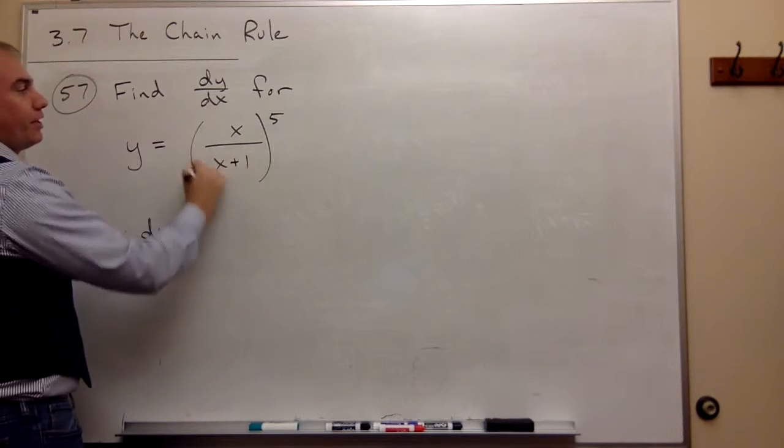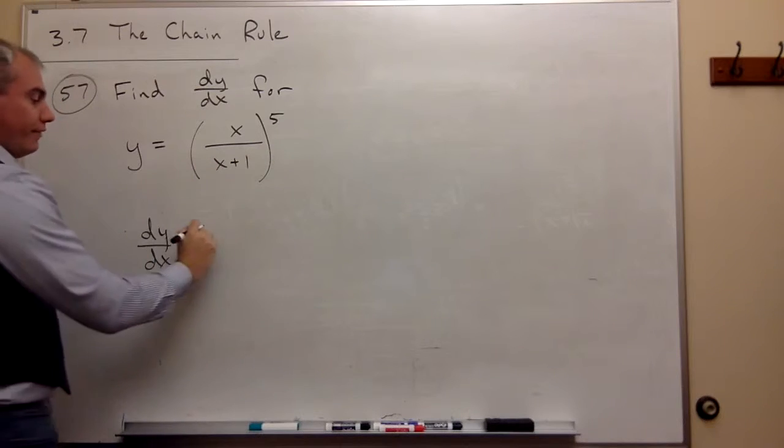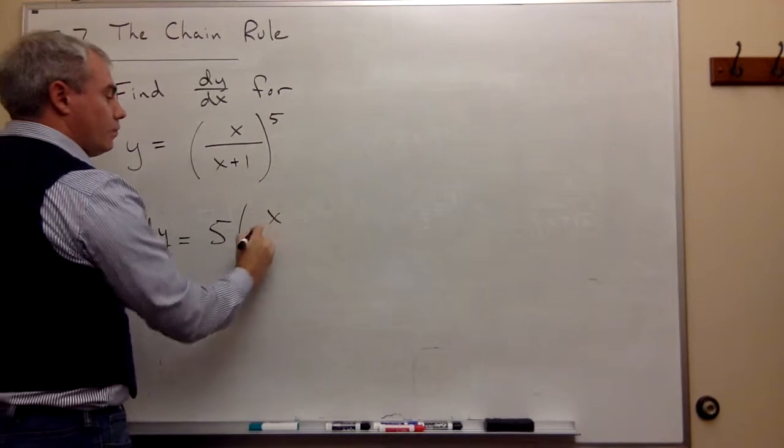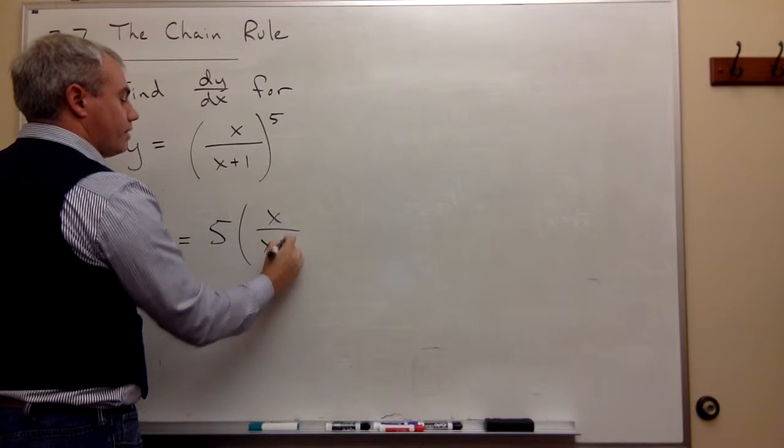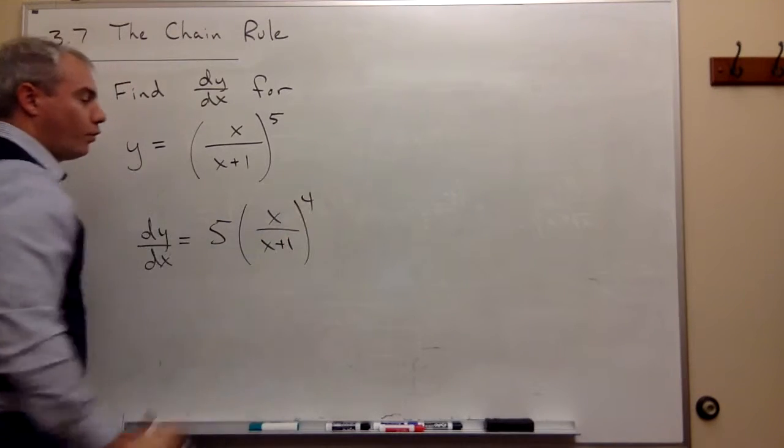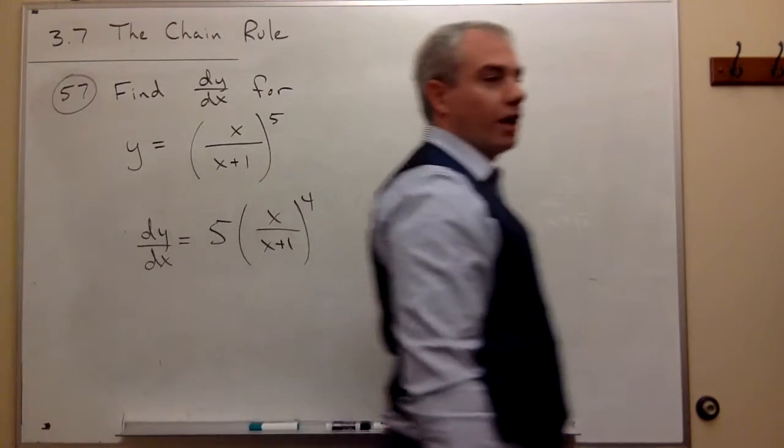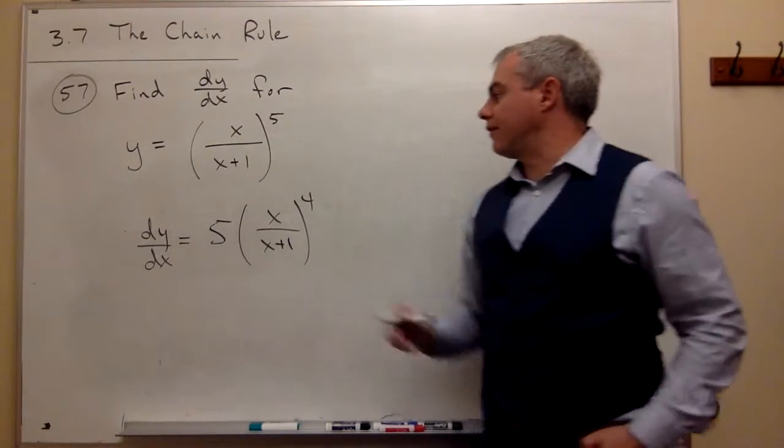So if I have something raised to the fifth, the derivative is five of those things, which in this case is x over x plus 1, to the fourth. Okay, so I've taken the derivative of something to the fifth.